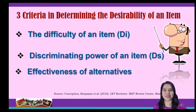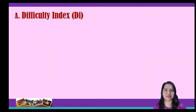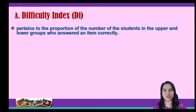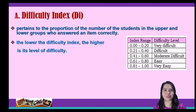First, let us discuss item difficulty or difficulty index. This pertains to the proportion of the number of students in the upper and lower group who answered an item correctly. By simply looking at the table, the lower the difficulty index, the higher is its level of difficulty.